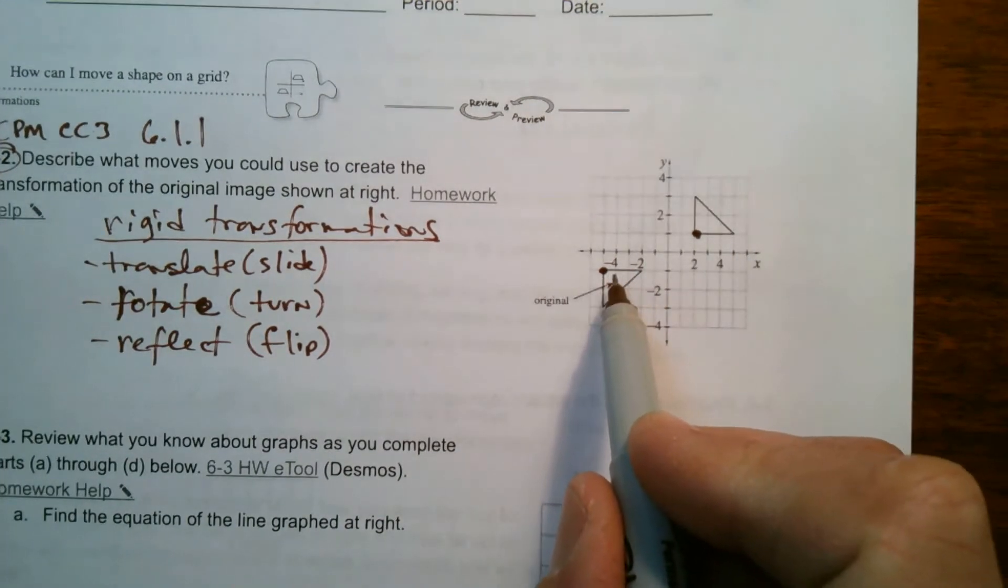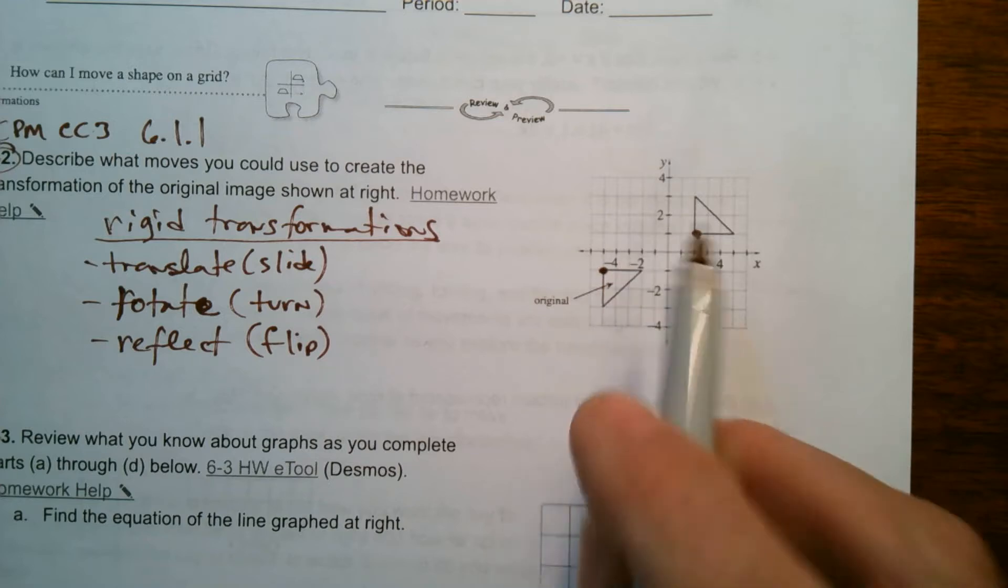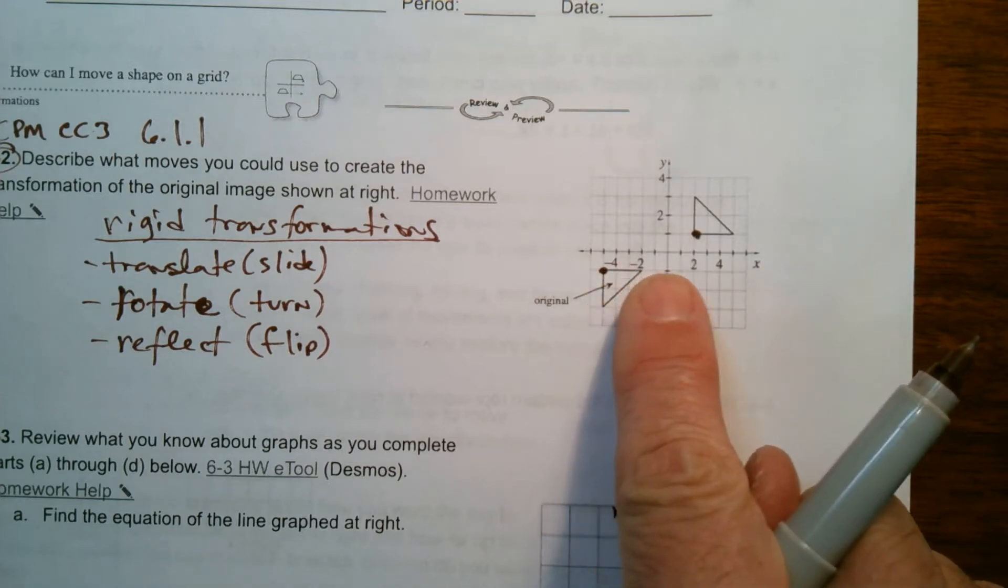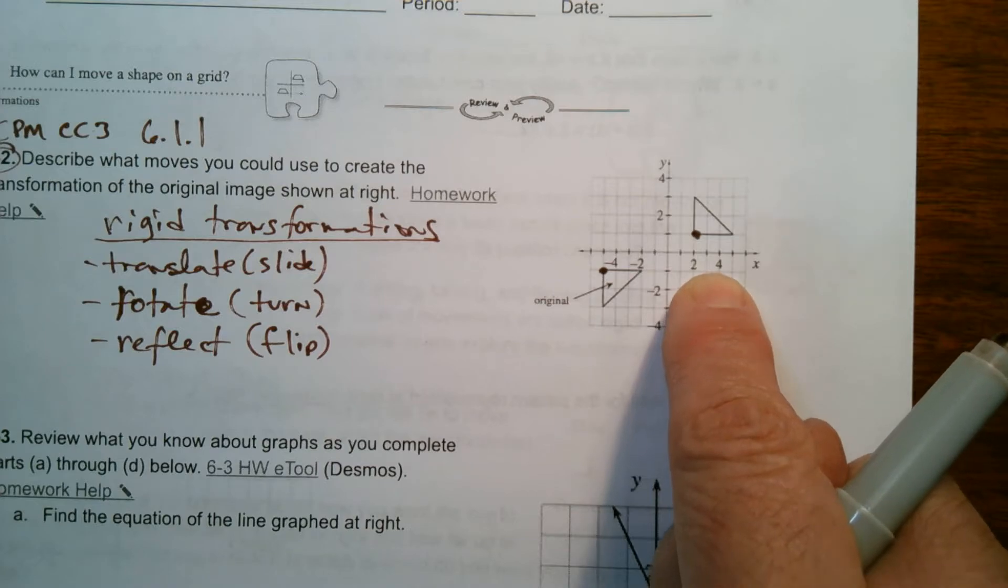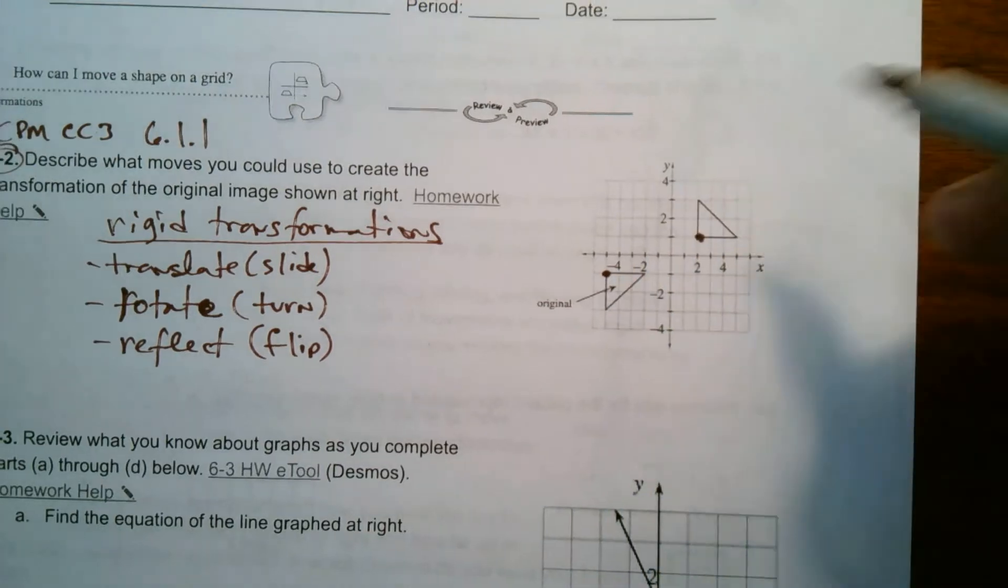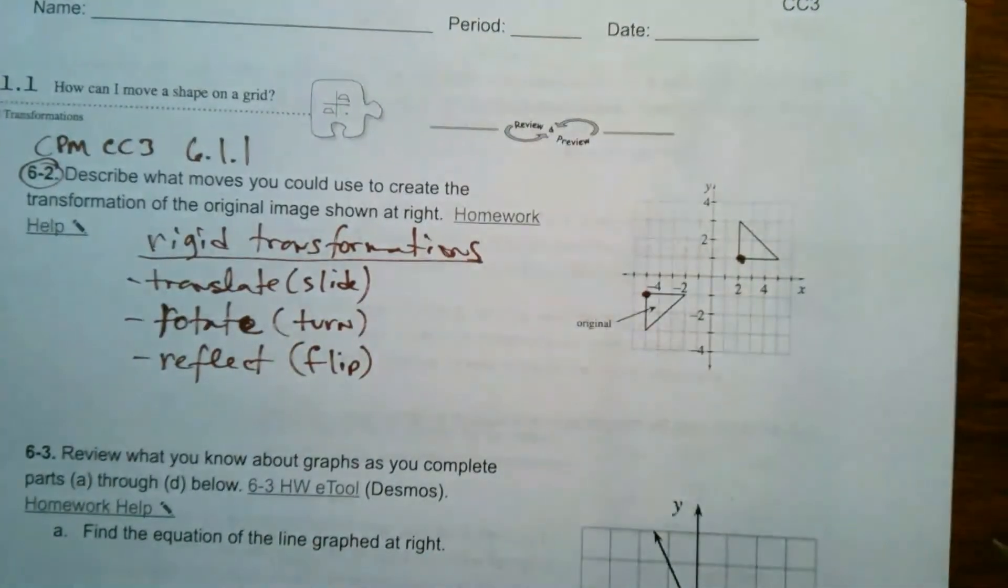So let's count over. I can see what's going to happen is I could take this and slide it over, translate it over. And then if I can somehow reflect it, it would flip onto the other side.